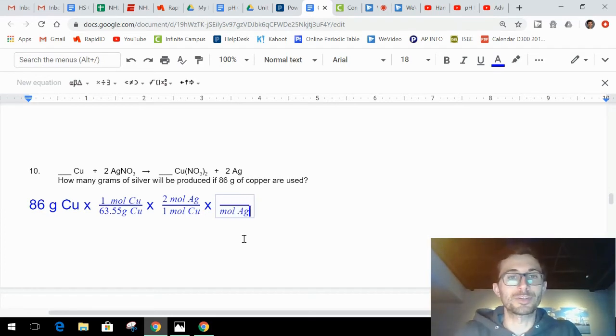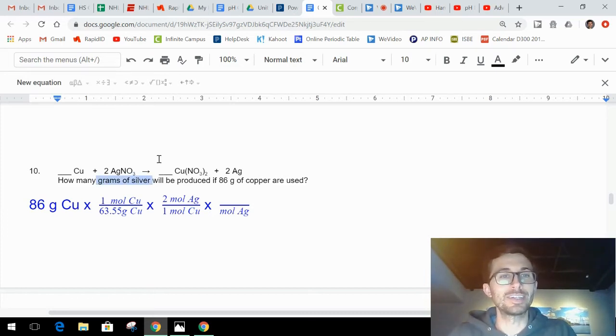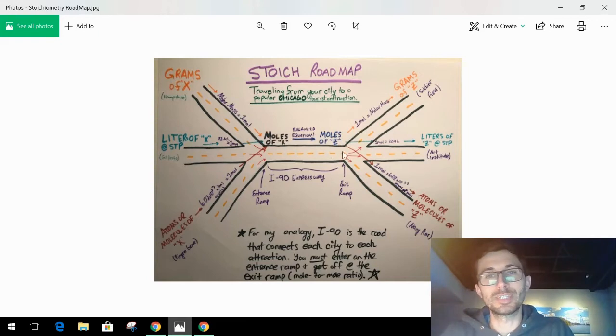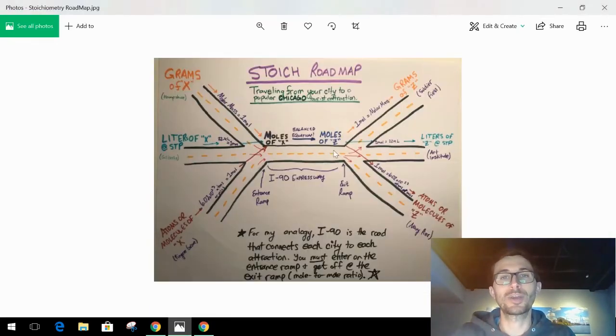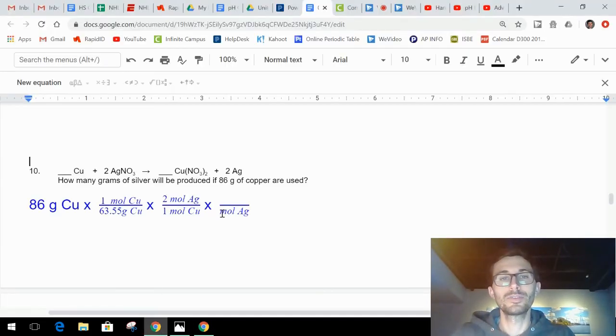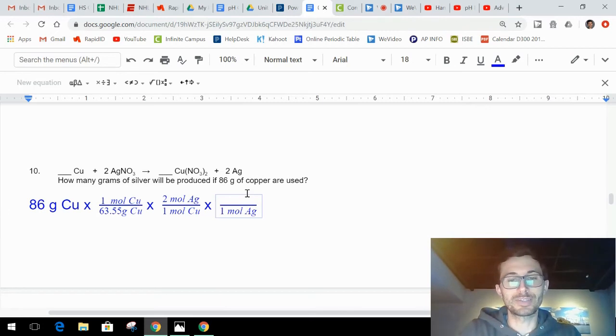Now I'm immediately going to put moles of silver in the bottom. We're not done yet. We need grams of silver. Don't get off the train yet. You got to get off at the grams of silver exit. We're almost there. Right now we're at moles of Z, in other words moles of silver. We got to get to grams. This is just a straight up mole to gram conversion from moles of silver up to grams. One mole is your molar mass. One mole of silver, molar mass of silver in the periodic table is 107.87 grams of silver.